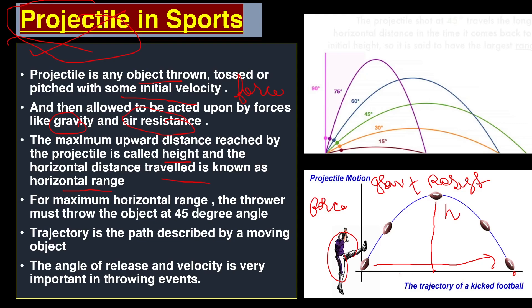To cover maximum horizontal distance, the object must be thrown at the correct angle with greater force. At 45 degrees, the horizontal distance covered is maximum. Trajectory is the path described by a moving object — so the entire curved path the football follows is its trajectory.